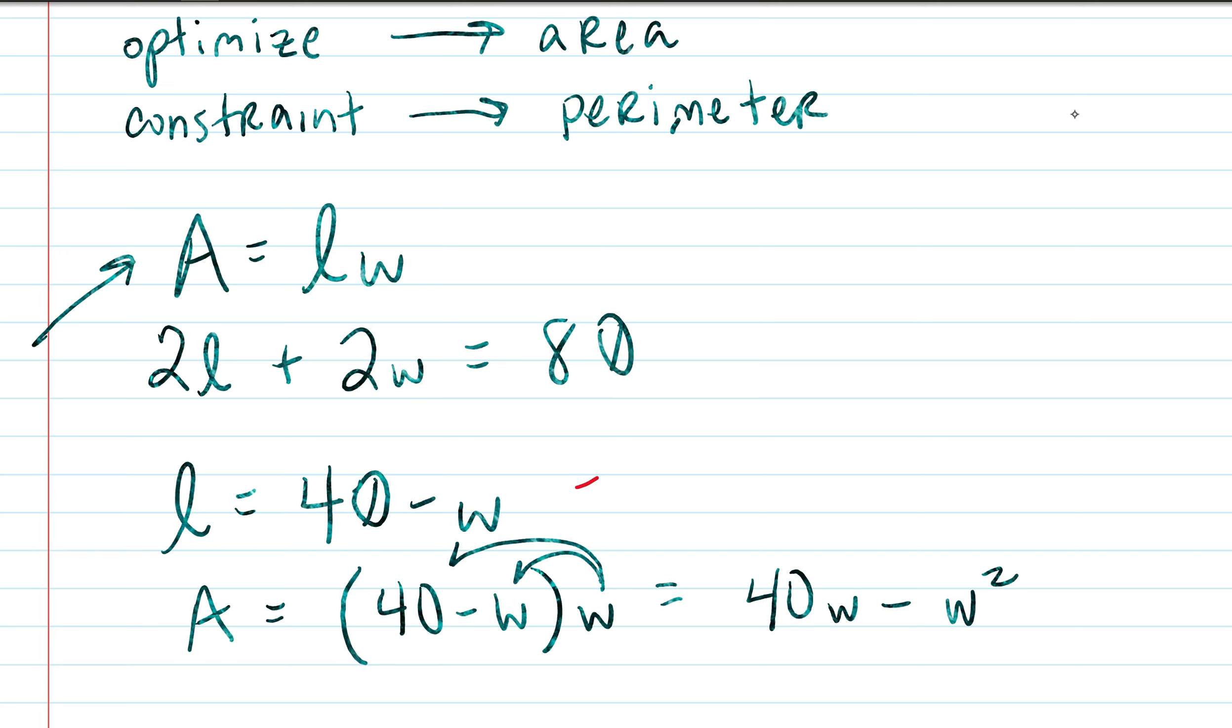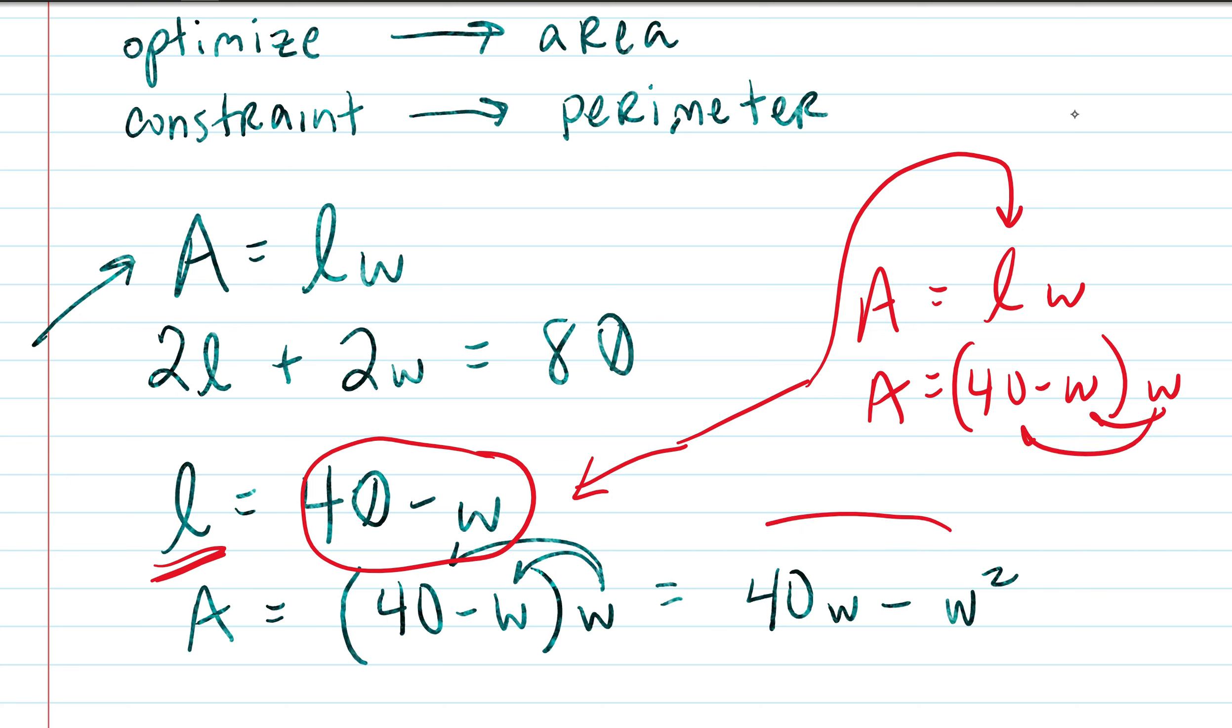See how we got the l equals 40 minus w from the previous explanation. Now we take that and we're just going to substitute it in. l equals 40 minus w, we're substituting that in to A equals lw. It's telling you what l is equal to, so you're plugging that in. Area equals 40 minus w times w. We just plugged in 40 minus w in for the length because it said so, and then I stated that we would just go ahead and distribute to get this right here next.